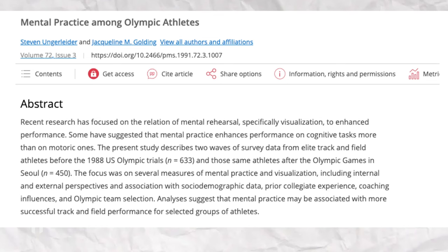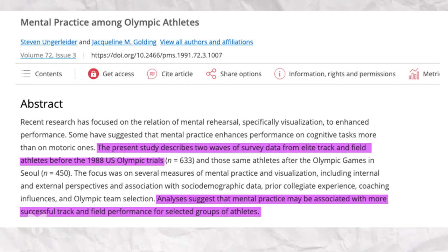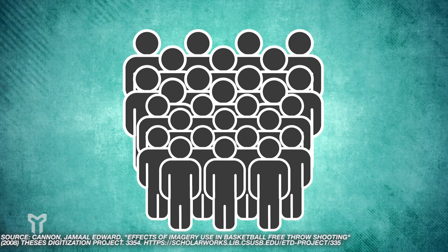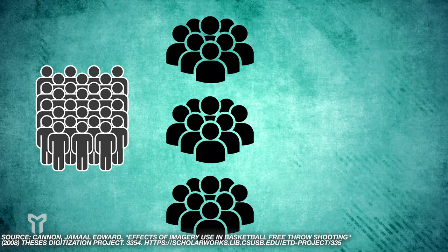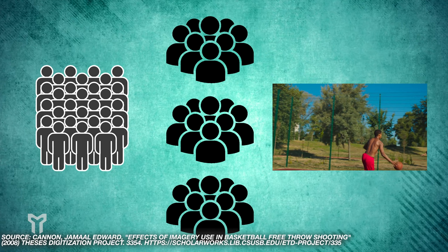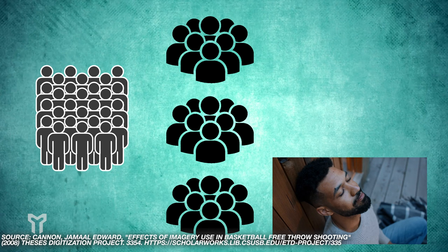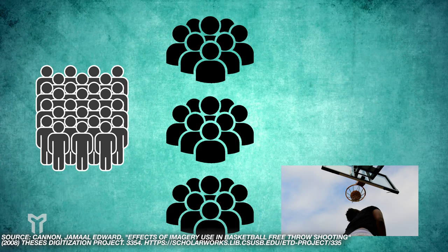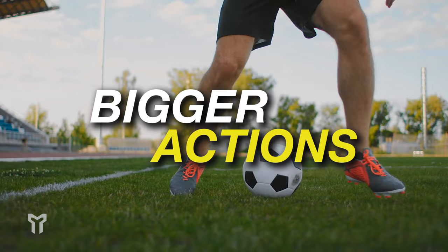We know from tons of research that this has been used since the 90s to help people build certainty. There was a famous study with basketball players — they took a group of 30, had them practice free throws, and split them into three groups of 10. One group continued as normal, one group just physically shot, and one group did three perfect visualizations of shooting with perfect form, intensity, and emotion without physically moving. The group that visualized got the best results — 25% better results, 80% of them — than the entire group. This shows that using visualization as part of your athletic performance will get you more consistent and better results.